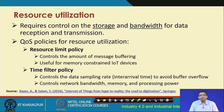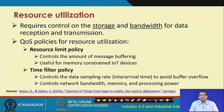Resource utilization is the first among the four. It talks about the concept of control over storage and bandwidth for data reception and transmission. Resources in the context of networks mean different things such as storage, bandwidth, and so on. QoS policies for resource utilization include the resource limit policy - which controls the amount of message buffering and is useful for memory-constrained IoT devices - and the time filter policy, which controls the data sampling rate and talks about inter-arrival time to avoid buffer overflow.